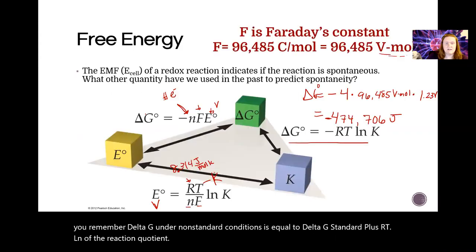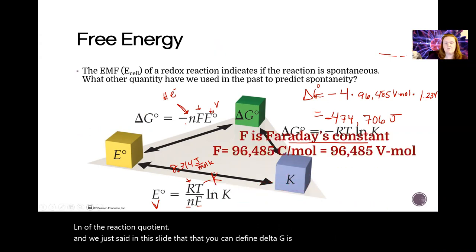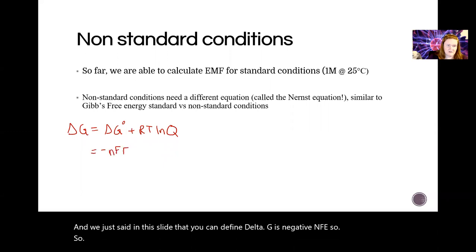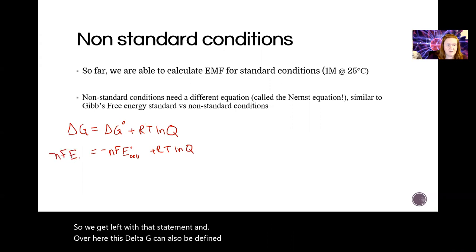delta G under non-standard conditions is equal to delta G standard plus RT ln of the reaction quotient. And we just said in this slide that you can define delta G as negative NF E cell. So we get left with that statement. And over here,